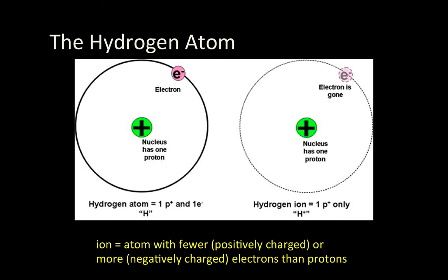So if you rip the electron off a hydrogen atom, you still have hydrogen, but now the negative charge is gone and can no longer balance out the positive charge of the proton. We call such atoms with charge imbalances because of missing or extra electrons, ions.